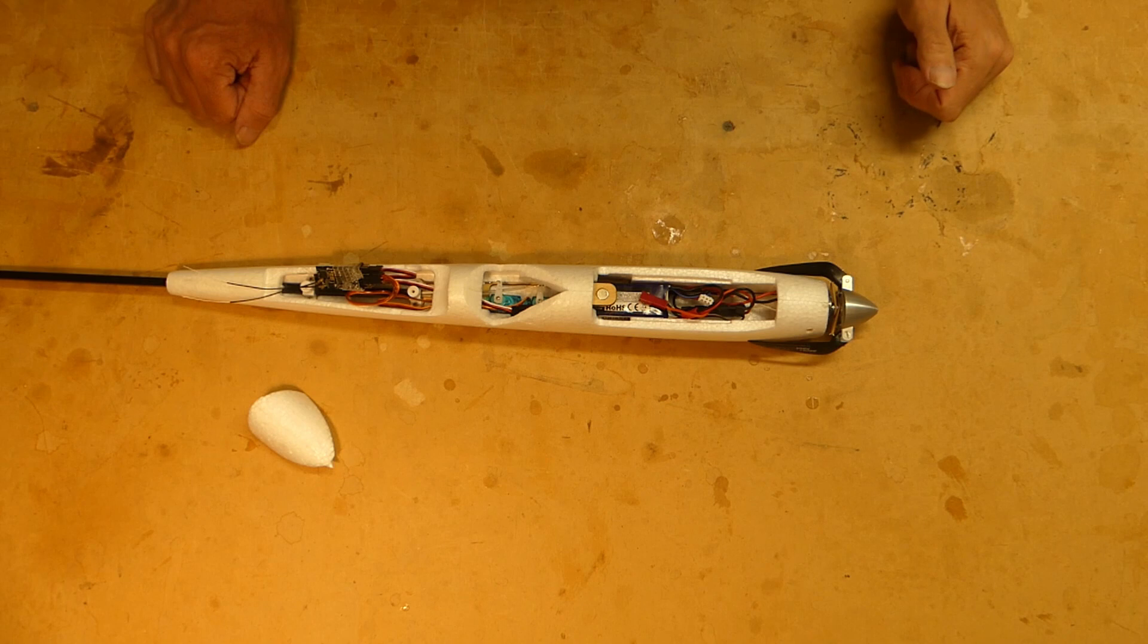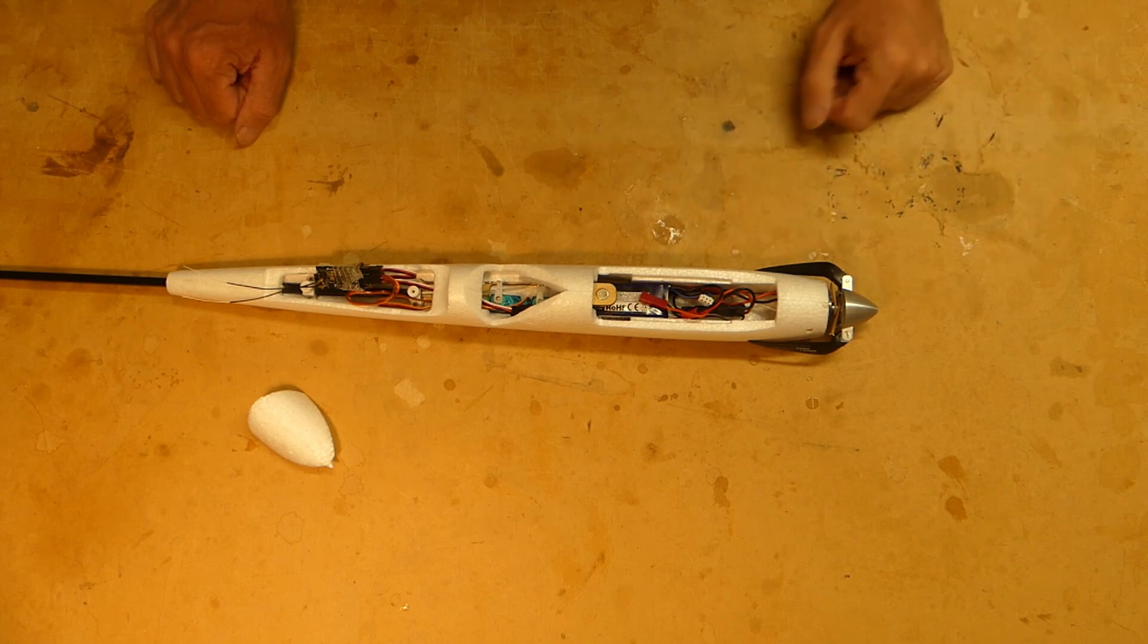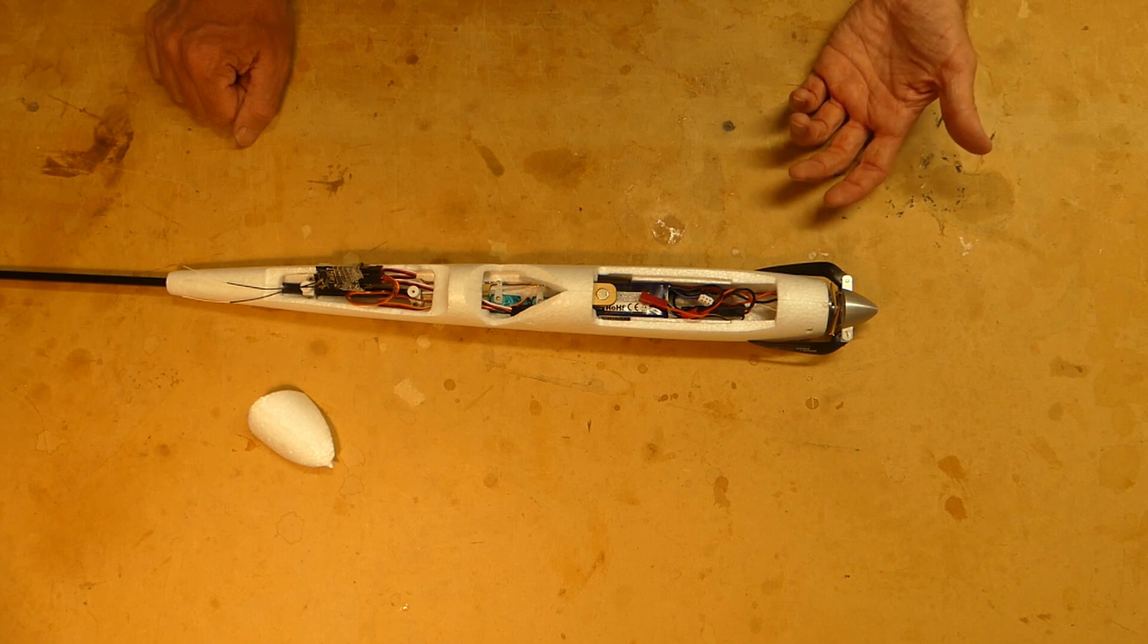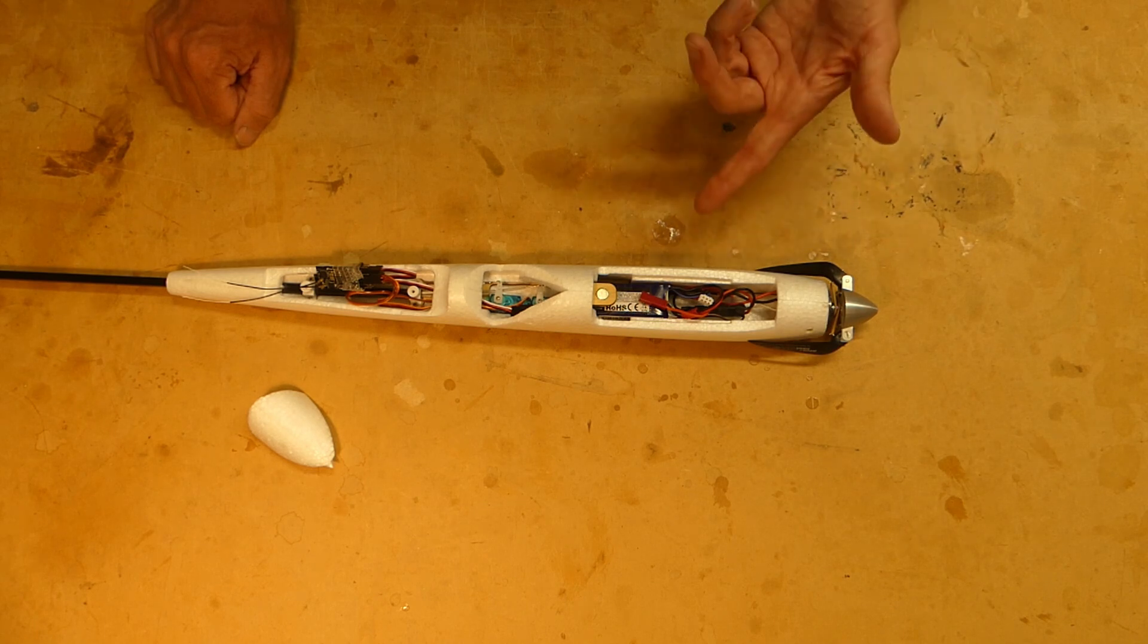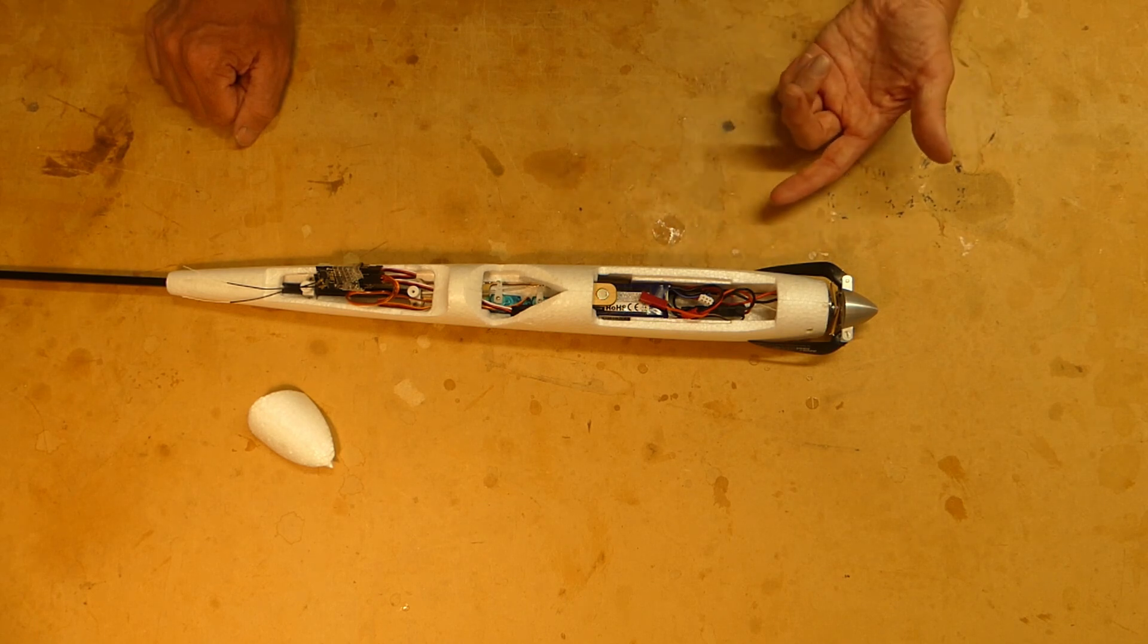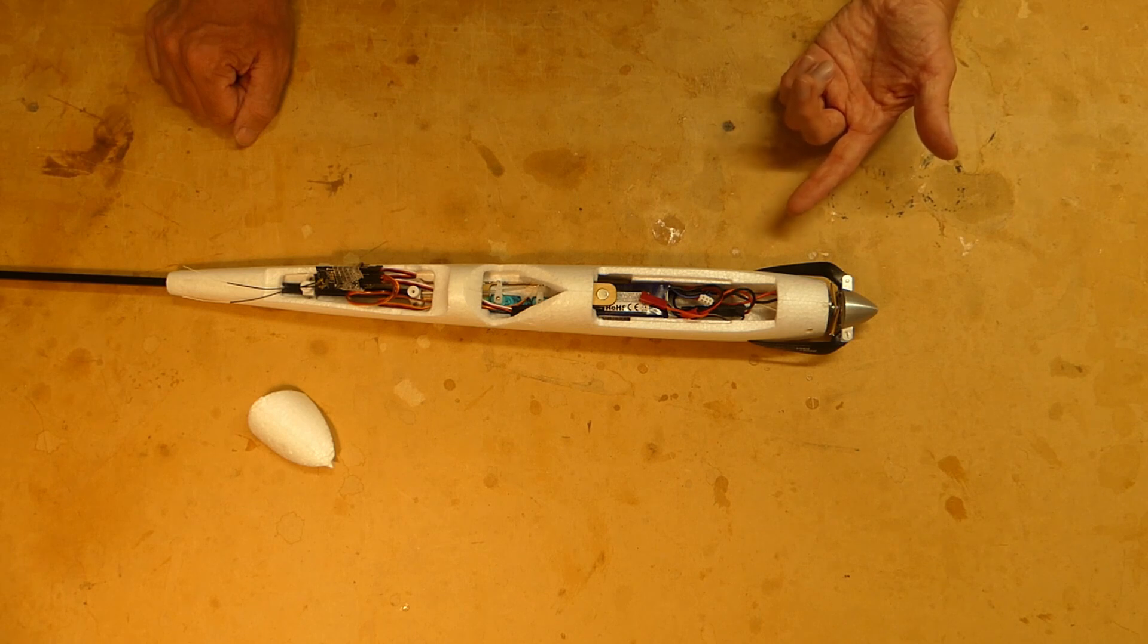All-up weight is about 370 grams with this LiPo and on 2S that allows me to climb at about 45 degrees without a problem. You could go 3S on this but I've never felt the need and it would stress the ESC more than it really needs to.